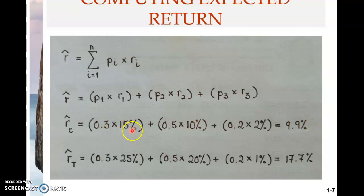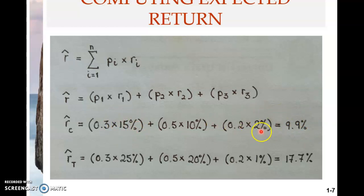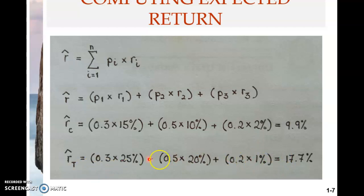For Stock C, 9.9% is none of the three possible returns but is somewhere in between. Note that the expected return cannot be higher than the highest possible return and cannot be lower than the lowest possible return. It must be between 15% and 2% for Stock C, and 17.7% cannot be higher than 25% or lower than 1% for Stock T, because it is actually a weighted average based on probability.